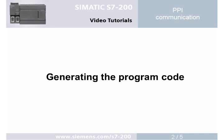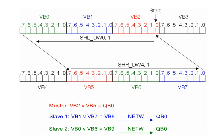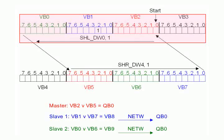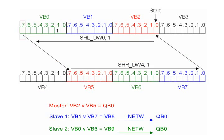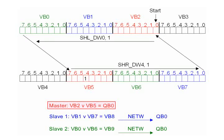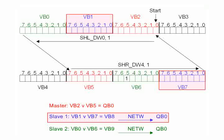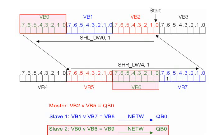Step 2: Generating the program code. The running light is generated in the master PLC. At the beginning, start bit V2.0 is set for the rising running light. Double word VD0 is shifted cycle-triggered left, and double word VD4 to the right, each by one bit. The transfer between rising and falling running light occurs from bit V0.7 to bit V5.7, and from bit V7.0 to start bit V2.0. Output byte 0 of the master results from the logical OR connection of byte 2 with byte 5. Byte 1 or byte 7 results in byte 8, which is written to the output byte of slave 1 via NetW, and byte 0 or byte 6 results in byte 9, which is written to the output byte of slave 2 via NetW.